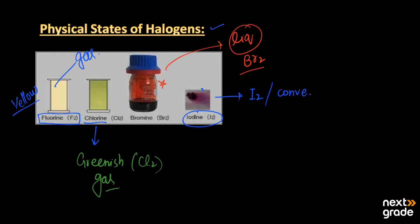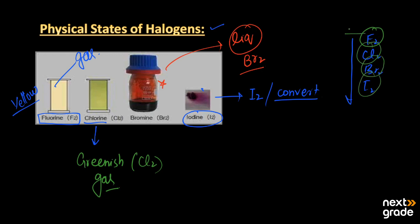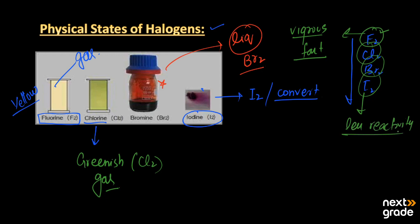Moving from top to bottom — from fluorine, chlorine, bromine, to iodine — fluorine is more reactive than chlorine, bromine, and iodine. All chemical reactions involving fluorine are more vigorous and faster, making them more difficult to handle. Iodine, on the other hand, can almost be considered non-reactive, having very low reactivity toward different types of chemical reactions. That concludes the introduction to halogens and Group 7A elements.